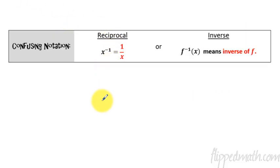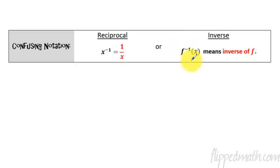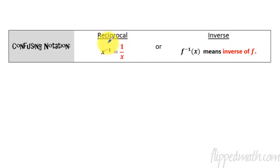Now here's some confusing notation that students get mixed up quite a bit. When we're used to seeing a negative 1 as an exponent, that just means it's 1 over x — you flip it, you make it a reciprocal. But if you're talking about a function and you put a negative 1 with function notation, it means it is the inverse. So this negative 1 and that negative 1 do not mean the same thing — you have to understand the context of the problem to know when it's talking about a reciprocal versus the inverse.